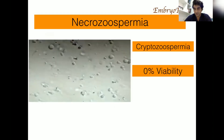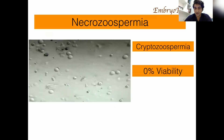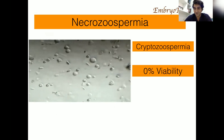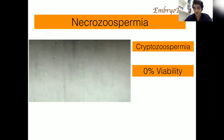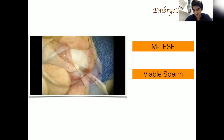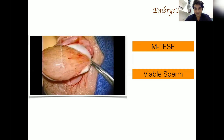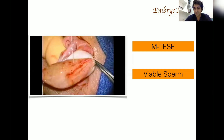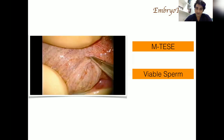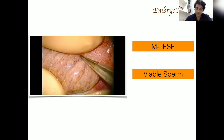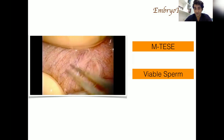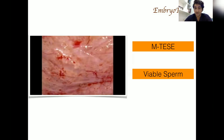The biggest challenge is when necrozoospermia is combined with cryptozoospermia — 0% viability with very few sperm. In this case, micro-TESE is needed: experts dissect the testis, look for dilated and healthy tubules, identify exact locations where sperm are present, extract viable sperm from there, and perform ICSI.